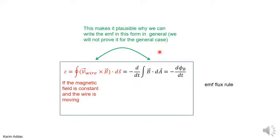But we just want to reiterate that this just makes it plausible why this term can be written like this. We didn't prove it in general for any case, but the general case is maybe proven in a more advanced course. You can always prove that this is equal to this, but we're not going to do it in this course. We just proved it for the particular simple case of the rod moving on a rail, two rails.